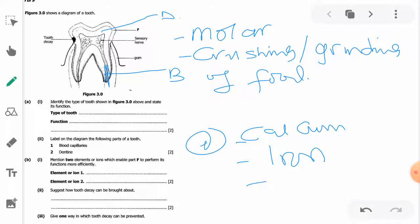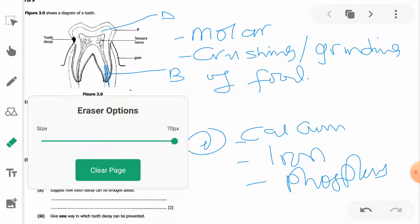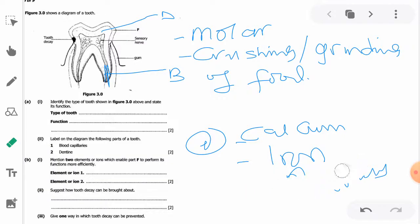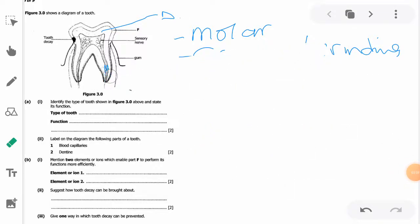Part C says suggest how tooth decay can be brought about. How is tooth decay brought about? So this one is just, you need to be careful with what you mention. How is tooth decay brought about? One, by